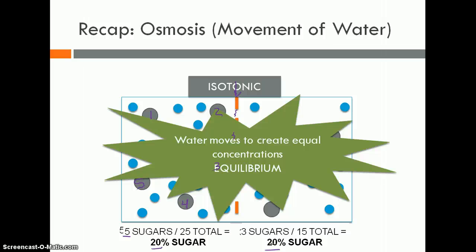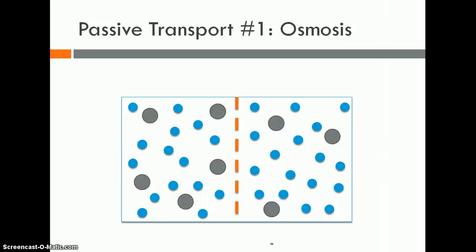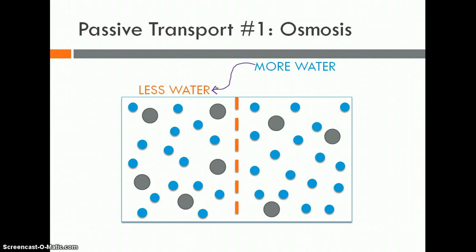Water moved from the hypotonic to the hypertonic environment. We started with more water on one side and water moved downhill to where there was less water. That's osmosis — taking water from where there's more and moving it to where there's less to reach equilibrium. In nature, particles and water don't want to be crowded; they move from where it's crowded to where there's more space.